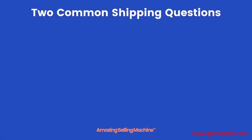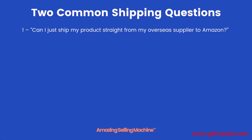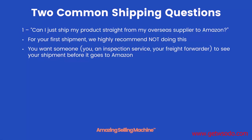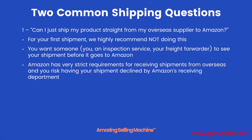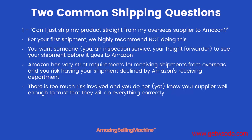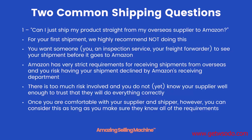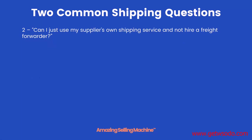There are two common shipping questions from new sellers. First: can you ship your product straight from your overseas supplier to Amazon? For your first shipment, we highly recommend not doing this. You want someone — whether it's you, an inspection service, or your freight forwarder — to see your shipment before it goes to Amazon. Amazon has very strict requirements for receiving shipments from overseas, and you risk having your shipment declined. You don't yet know your supplier well enough to trust they'll do everything correctly, but once you're comfortable with them you can consider it.